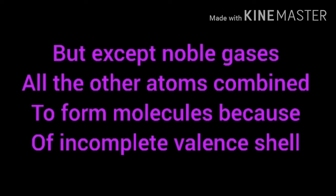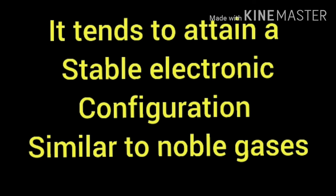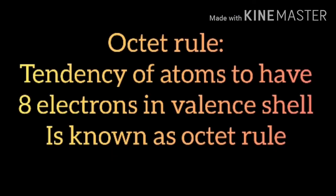All other atoms of an element combine with another element to attain the stable electronic configuration of inert gases. These atoms tend to become like inert gases by losing or gaining an electron, and so form a bond. The tendency of an atom to have eight electrons in the valence shell is known as the Octet Rule.